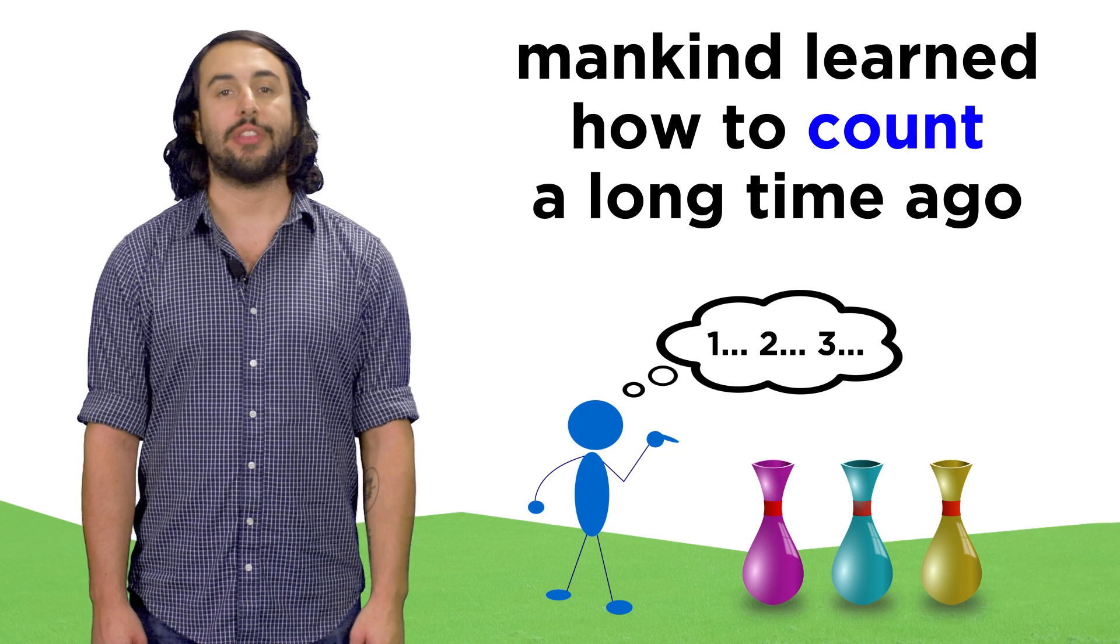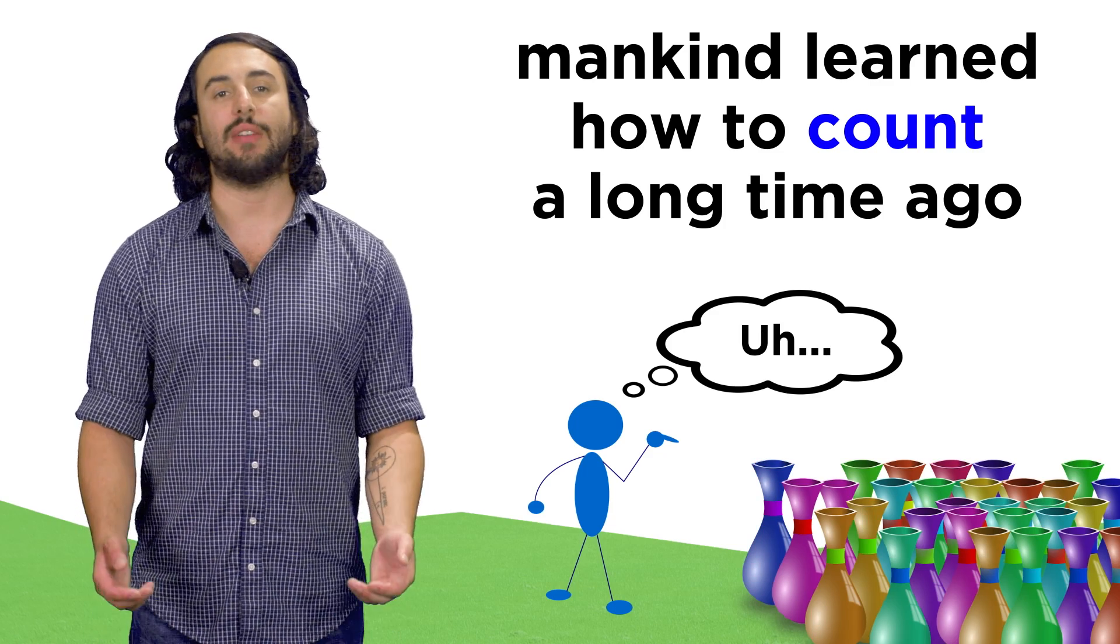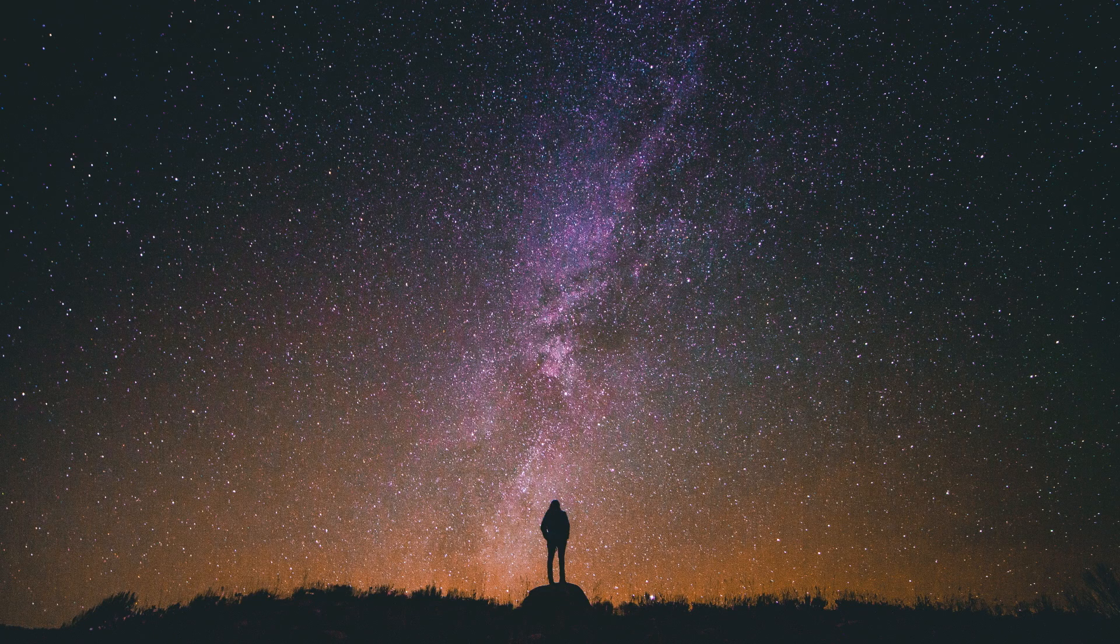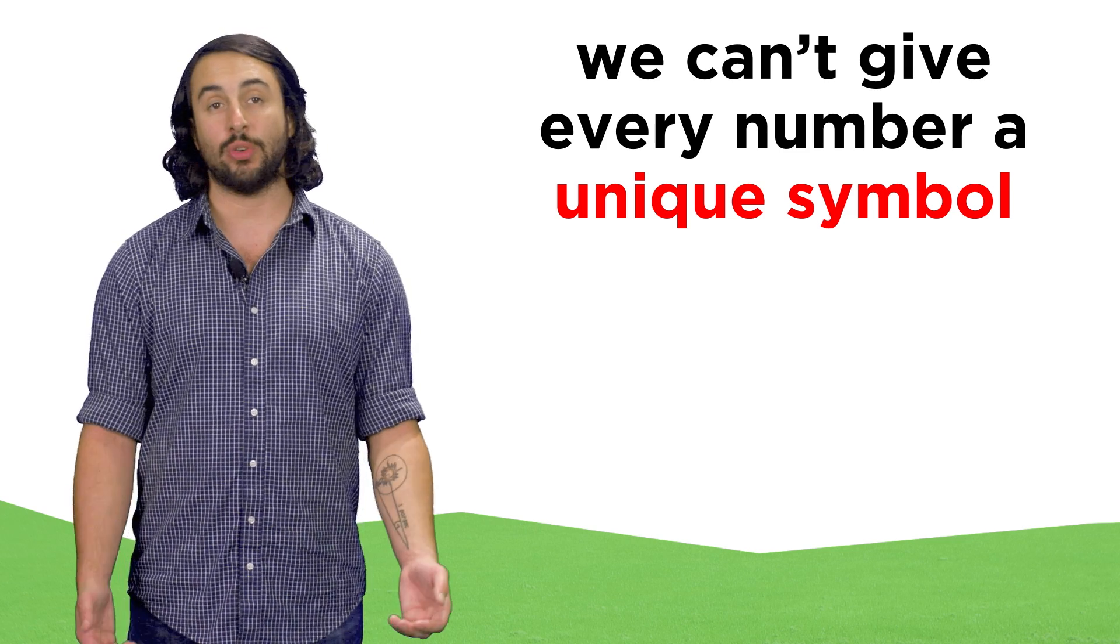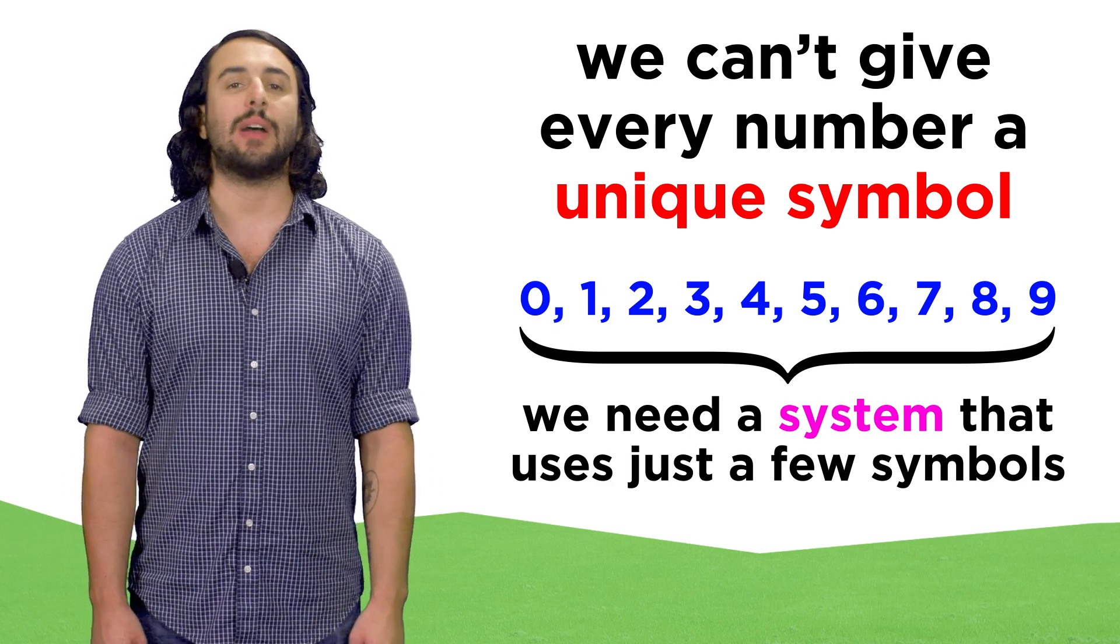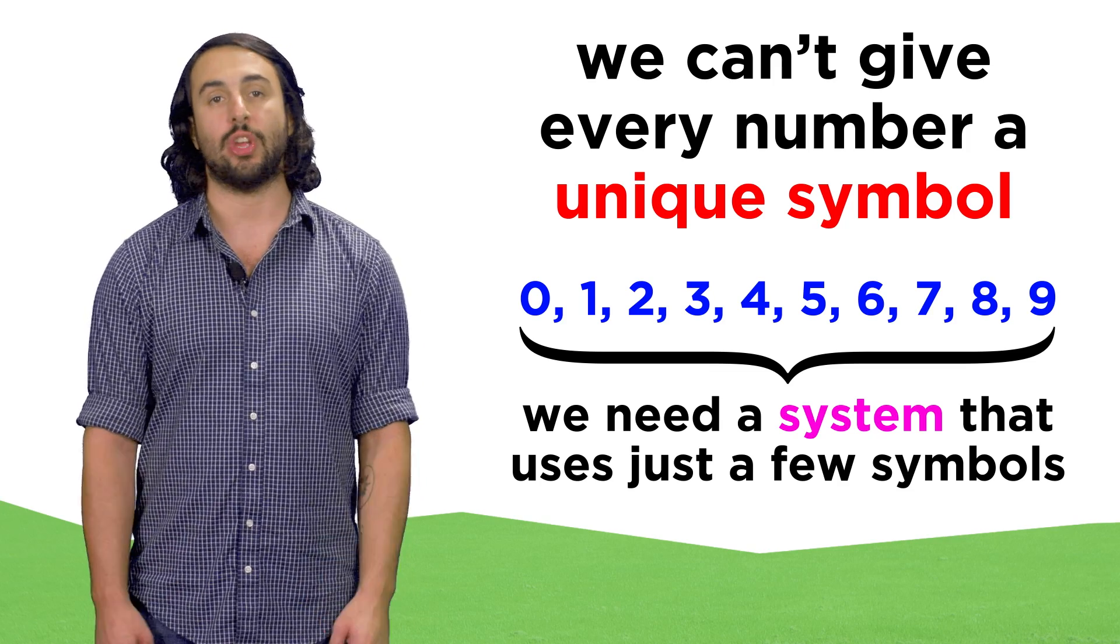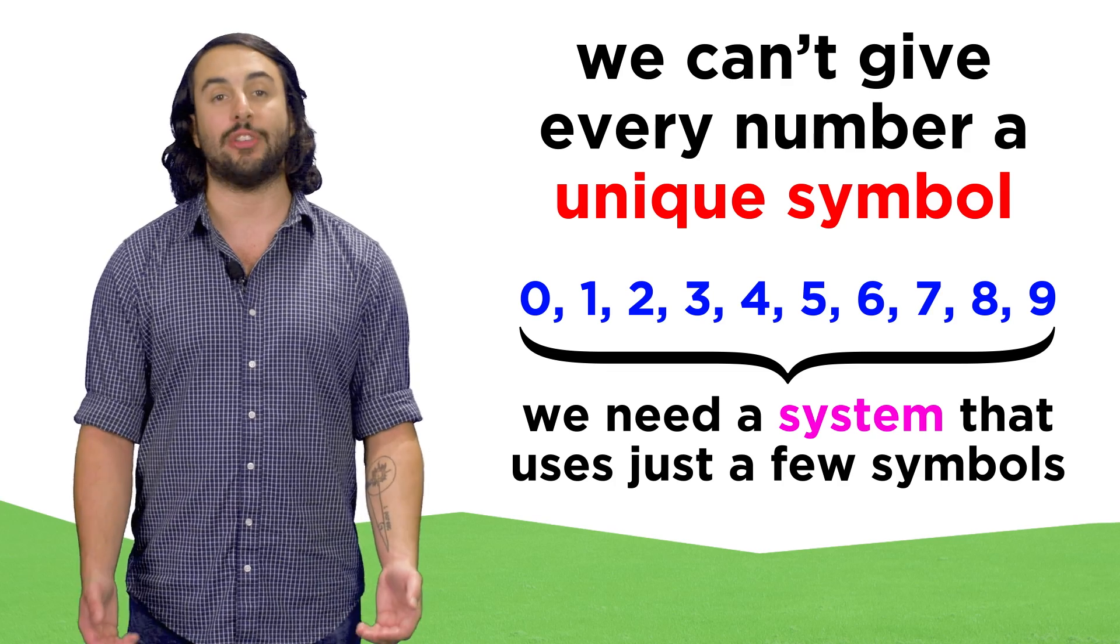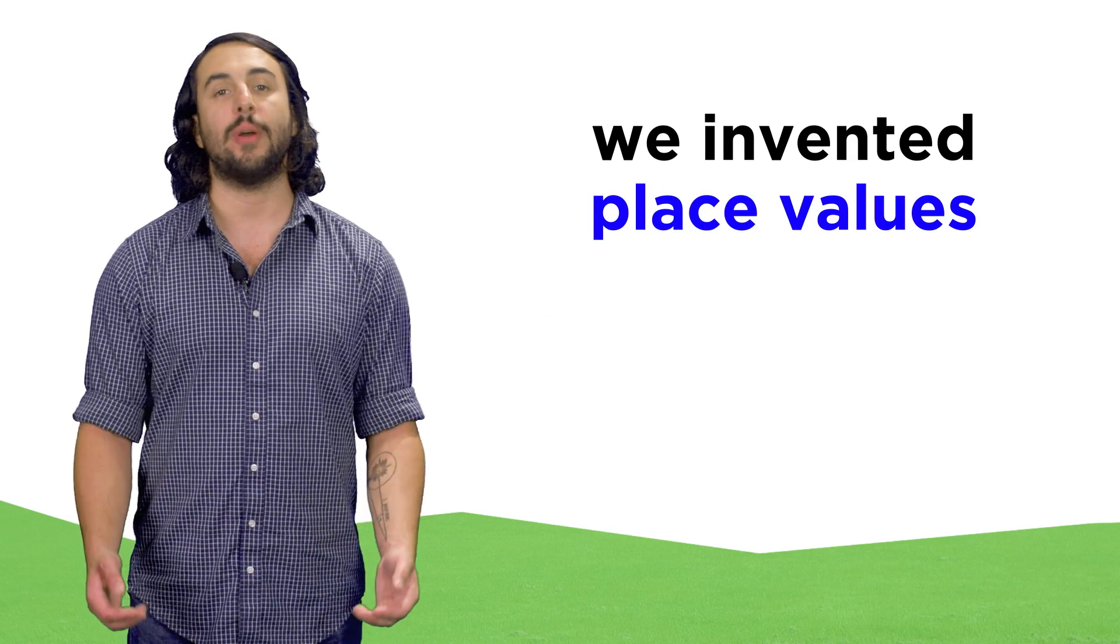When we started counting things thousands of years ago, we quickly realized that numbers can get very big very fast, whether you're counting grains of sand or stars in the night sky. Therefore, we couldn't give every possible number its own unique symbol. We needed some kind of system that uses a small collection of symbols over and over to represent every numerical value imaginable. That's why we came up with the notion of place values.